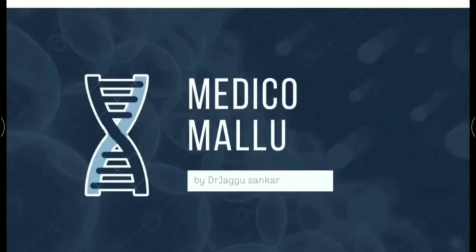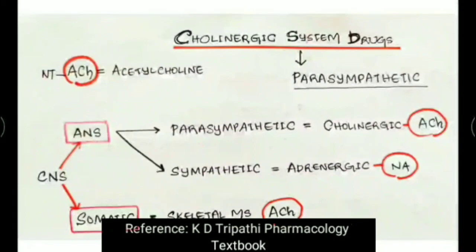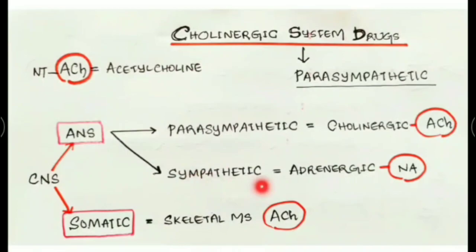Welcome to Medical Mallu. Today we are going to discuss some topics from pharmacology. The topic is the cholinergic system and its drugs. The cholinergic system is the parasympathetic system in our body. The CNS can be divided into the ANS as well as the somatic nervous system. ANS is the autonomic nervous system, which is divided into parasympathetic and sympathetic nervous systems. The parasympathetic is the cholinergic system, with the chief neurotransmitter acetylcholine (ACh).